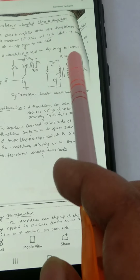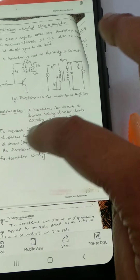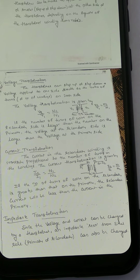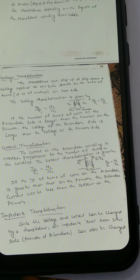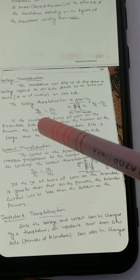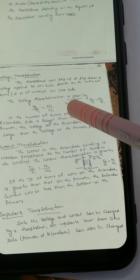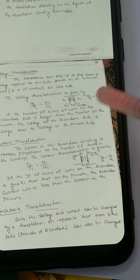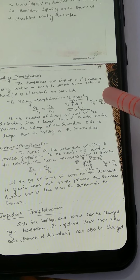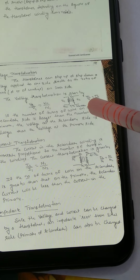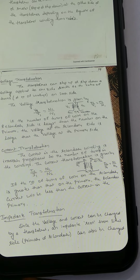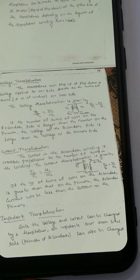Now, what is voltage transformation? The transformer can step up or step down a voltage applied on one side directly as the ratio of the turns on each side. The voltage transformation is given by: V2 divided by V1 is equal to N2 divided by N1, where V1 is the voltage across the primary winding, V2 is the voltage across the secondary winding, N1 is the number of turns in the primary, and N2 is the number of turns in the secondary.